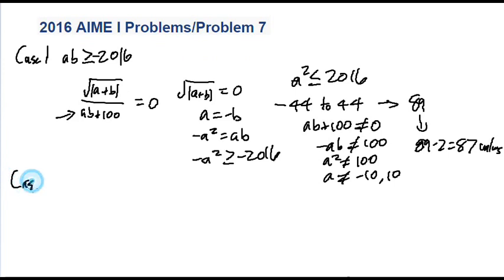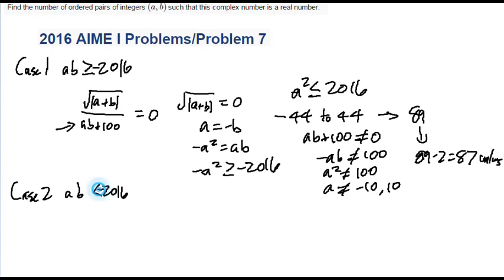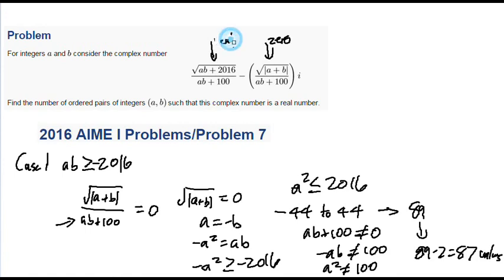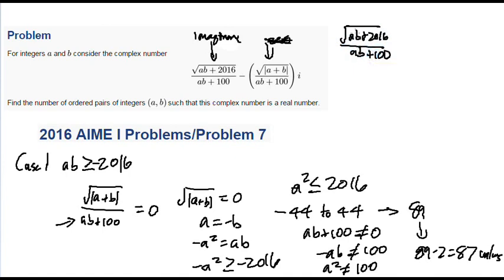Now Case 2 is a bit more annoying, because it assumes that ab is less than negative 2016. What this means is that if ab is less than negative 2016, then this part doesn't become real — it becomes imaginary. So the square root of (ab plus 2016) over (ab plus 100) — the part inside the square root is negative. So that would be negative 1 times negative ab minus 2016 over ab plus 100, and this becomes positive because we factored out the negative 1.